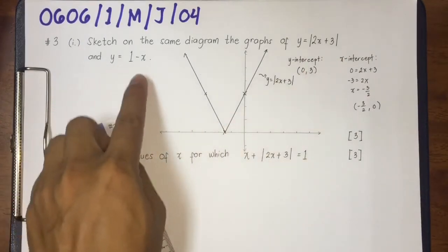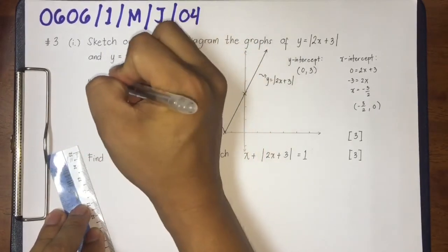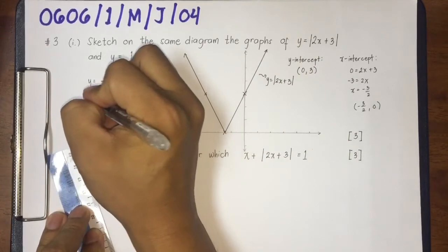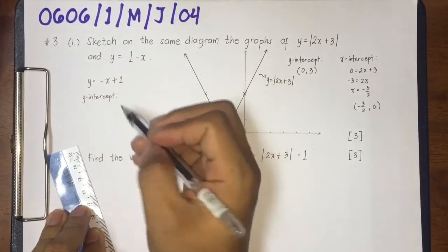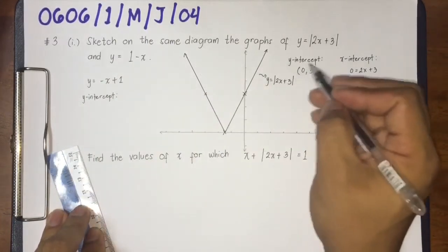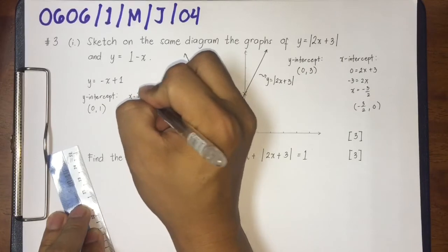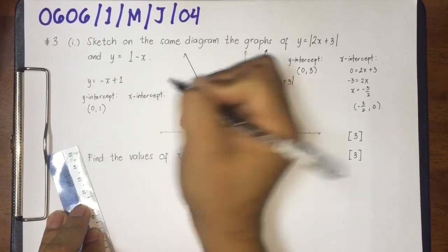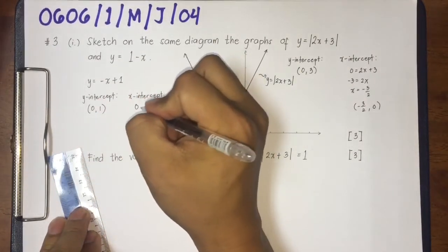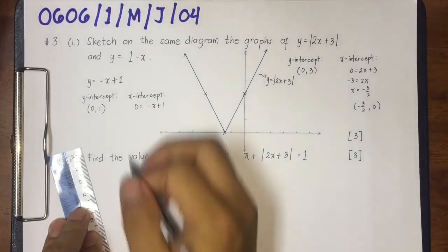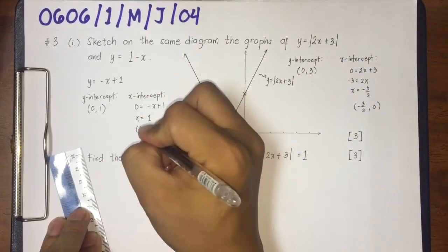Next, we sketch y equals 1 minus x. This can be written as y equals negative x plus 1. Therefore, c equals 1, so the y-intercept is (0, 1). For the x-intercept, make y equal to 0: 0 equals negative x plus 1, therefore x equals 1. So the x-intercept is (1, 0).